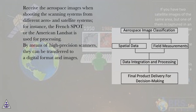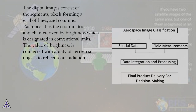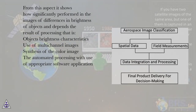By means of high-precision scanners, they can be transferred to a digital format. The digital images consist of segments — pixels forming a grid of lines and columns. Each pixel has coordinates and is characterized by brightness, which is designated in conventional units. The value of brightness is connected with the ability of terrestrial objects to reflect solar radiation, and it significantly affects differences in brightness of objects and the result of processing, specifically: objects' brightness characteristics, use of multi-channel images, synthesis of the color image, and the automated processing with use of appropriate software application.